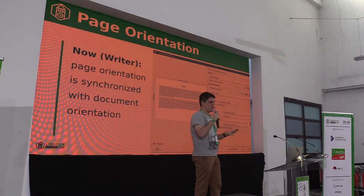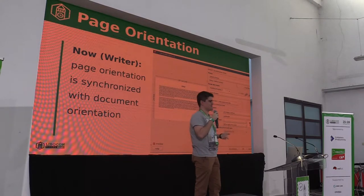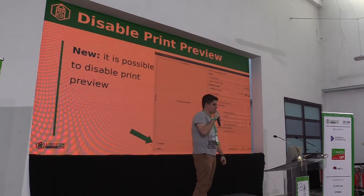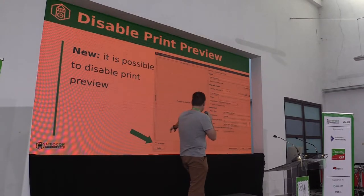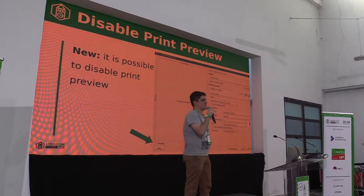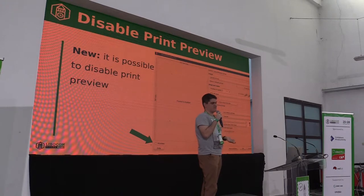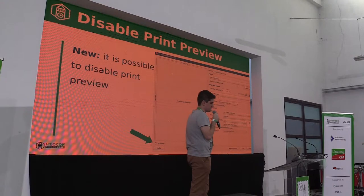This means you won't have to close the print dialogue, go to format page, change orientation there, and then come back to the print dialogue. We also added an option to disable the print preview. This option is useful in cases where you have a slow machine or your documents are large — rendering the print preview would take a very annoying amount of time. So that option is available for those users.